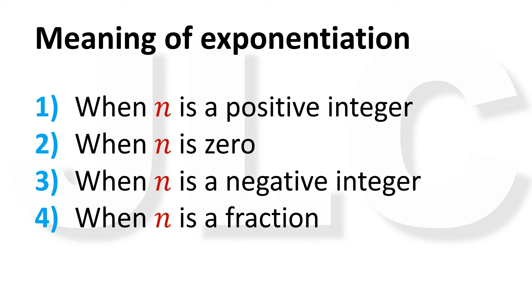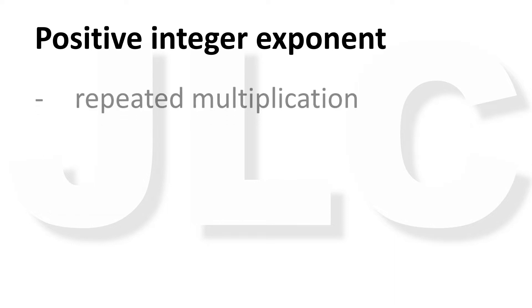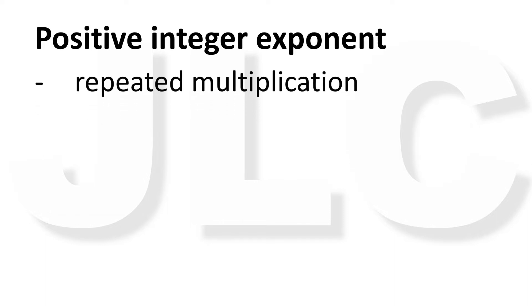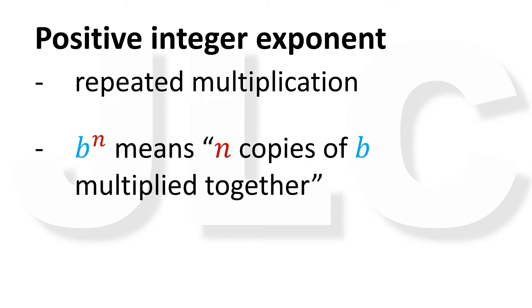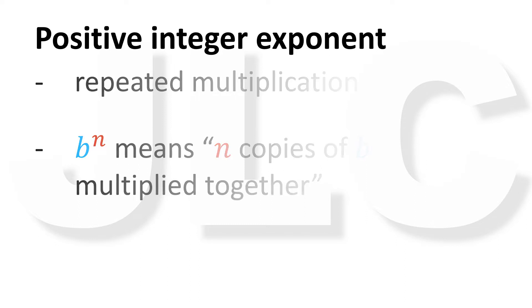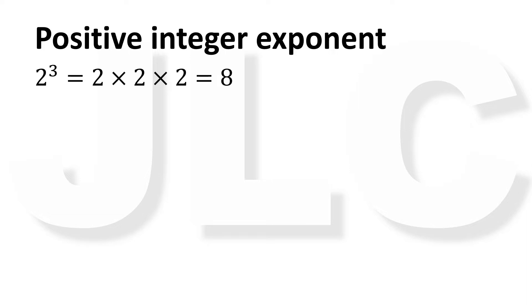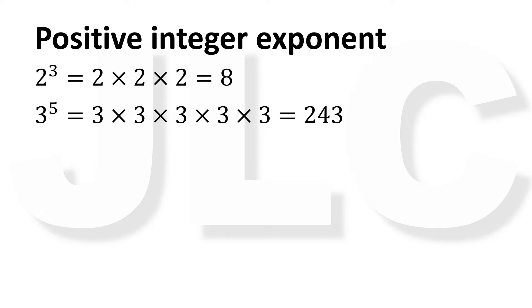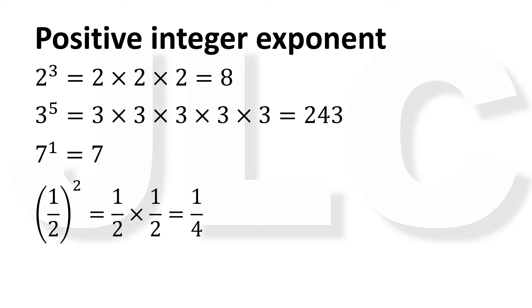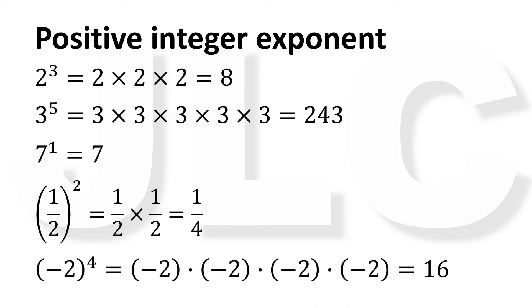Let's start with a positive integer. When the exponent is a positive integer, exponentiation means repeated multiplication. The operation b raised to n means n copies of b multiplied together. For example, 2 raised to 3 equals 2 times 2 times 2, equals 8. 3 raised to 5 equals 3 times 3 times 3 times 3 times 3, equals 243. 7 raised to 1 equals 7. 1 half raised to 2 equals 1 half times 1 half, equals 1 fourth. Negative 2 raised to 4 equals negative 2 times negative 2 times negative 2 times negative 2,